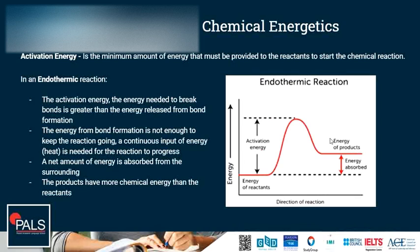In an endothermic reaction, the activation energy is greater than the energy released from bond formation. The energy from bond formation is not enough to keep the reaction going, so a continuous input of energy — usually heat — is needed for the reaction to progress. A net amount of energy is absorbed from the surrounding, and the products have more chemical energy than the reactants. If we stop putting energy in, there will not be enough to overcome the activation energy of the remaining reactants.